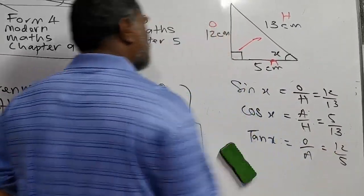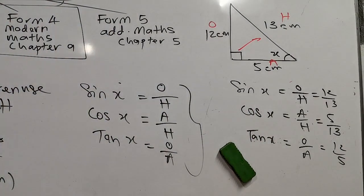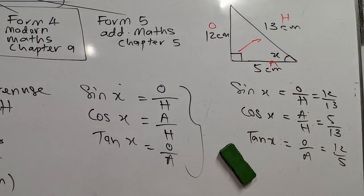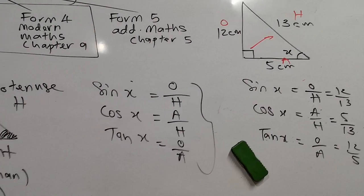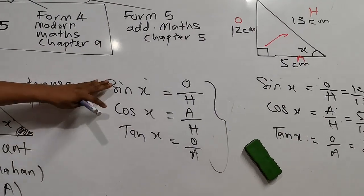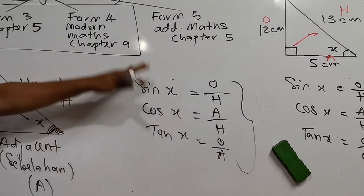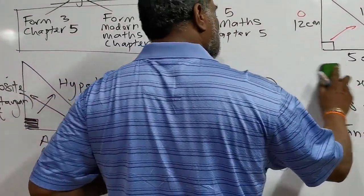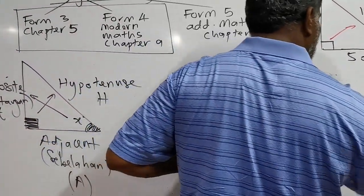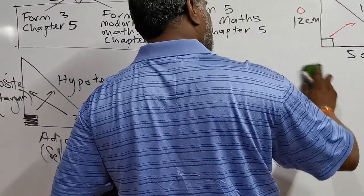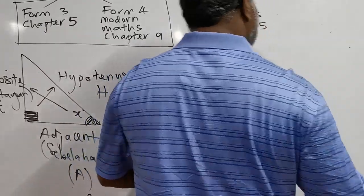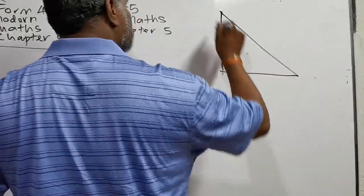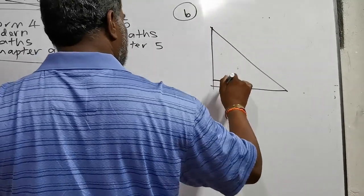This is a PT3 level question. I think you already understand. This is the way to find sin, cos, and tangent. Now I'll give you a different type of question asked in the exam — Form 3 geometry level especially. They will give you a triangle ABC.